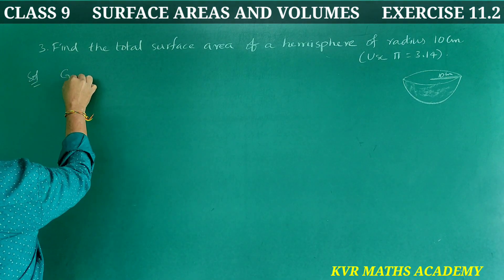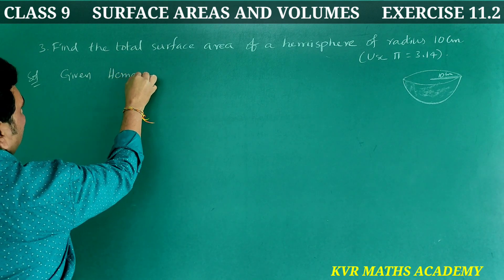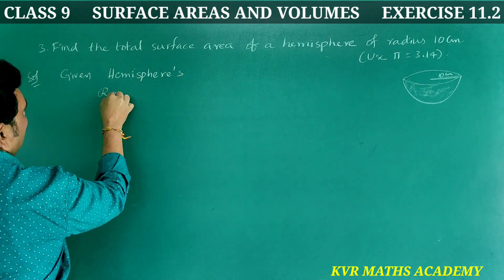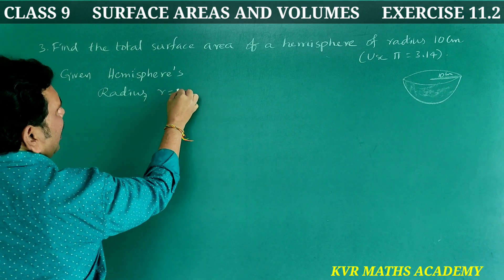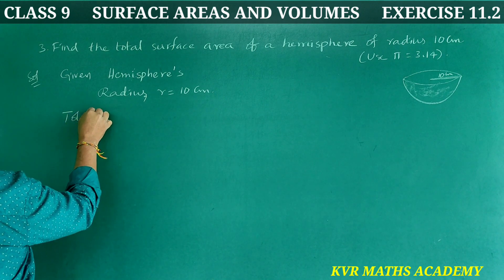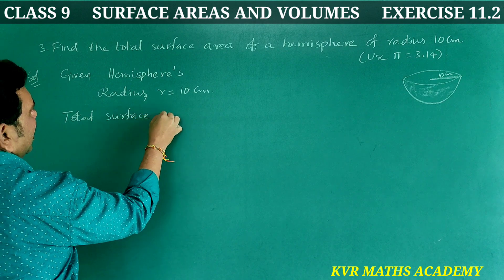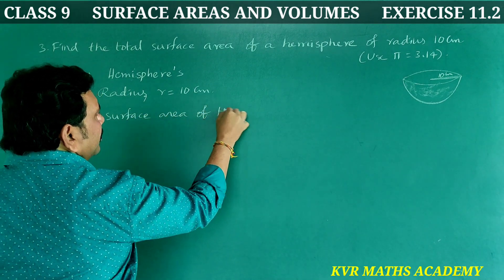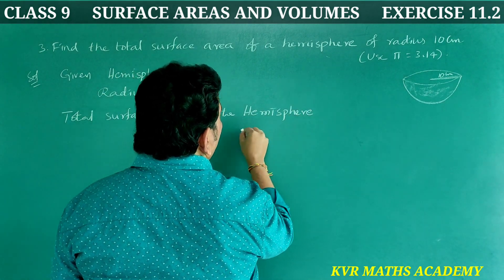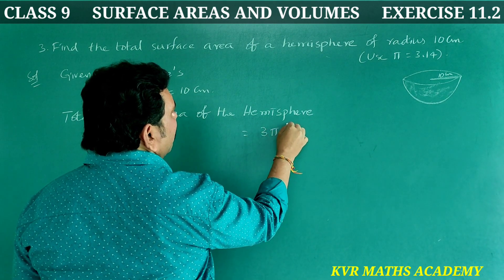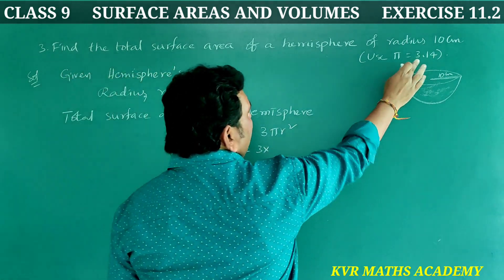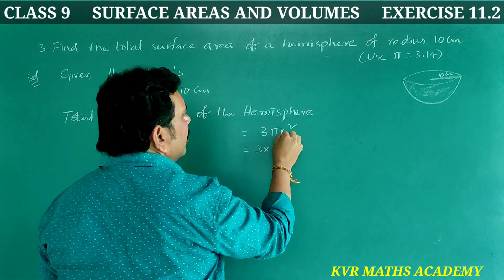Solution. Given: radius r = 10 centimetres. Total surface area of the hemisphere = 3πr². That is equal to 3 × 3.14 × 10 × 10.